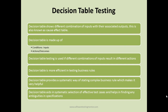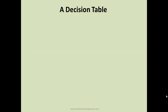Decision tables aid in the systematic selection of effective test cases and help in finding ambiguities in specifications. If you have a module where the outcome depends on combinations of inputs, you can list all conditions and their outcomes in a decision table. If something is missing from the table, that indicates ambiguities in the requirements, which can then be clarified.